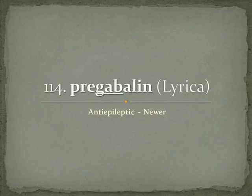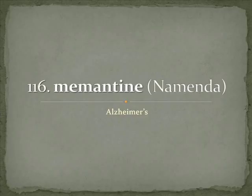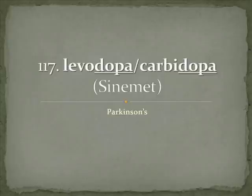Donepezil is Aricept, and this is for Alzheimer's. You can use the A to remind you of Alzheimer's, and think of better perception — somebody who is forgetting is going to be doing better. Memantine is Namenda, and that name actually relates to the type of drug it is — it's an NMDA receptor antagonist.